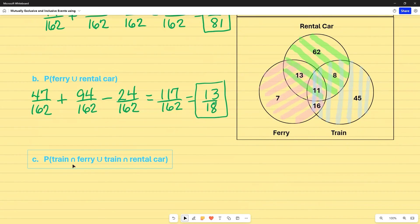So this is the train and this time I'm using an intersection sign, ferry or train and rental car. So first let's look at train and ferry. The train and ferry are right here. So where the pink and the blue met. So that's going to be a total of 27, 11 plus 16. We see the union sign, which is or. So we're going to add, and now we're going to look at the train and rental car. So where the blue and the green meet, and that's going to be here 11 plus eight. And so that gives me 19 out of that same 162. And there was an overlap where all three of them met. So the green, the pink, and the blue are all at 11. So I want to go ahead and deduct that 11 out. And that is going to leave me with the probability of 35 out of 162. That's my final answer.